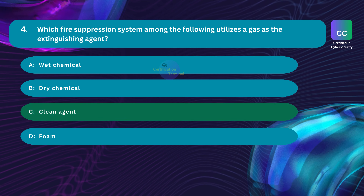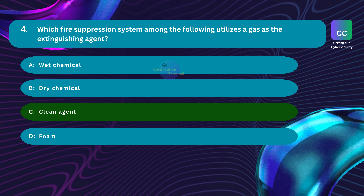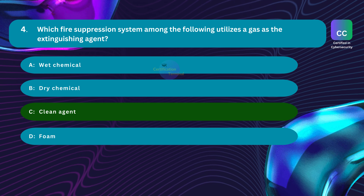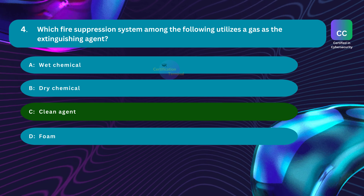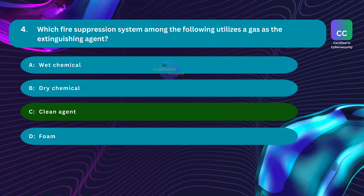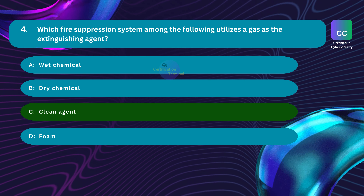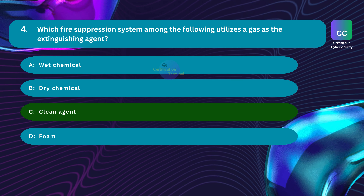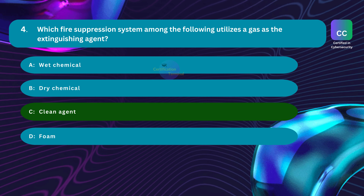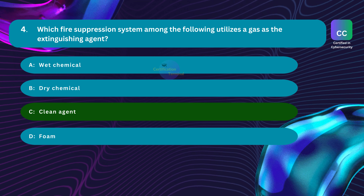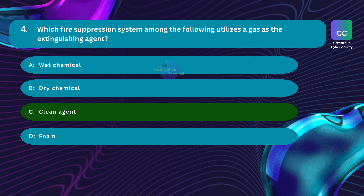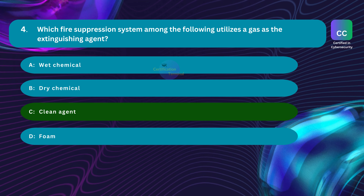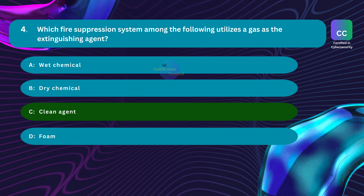The correct answer is Option C: clean agent. Clean agent systems use gases such as FM-200, NOVAC-1230, or CO2 that are non-conductive and leave no residue, making them suitable for protecting sensitive equipment like data centers. Option A, wet chemical, is incorrect — these systems utilize a potassium-based solution that reacts with cooking oils or fats to create a soapy layer preventing re-ignition. Option B, dry chemical, is incorrect — these systems use powdered chemicals like sodium bicarbonate or potassium chloride; when discharged, these fine powders coat the fuel, interrupting the chemical reaction of the fire. Option D, foam, is incorrect — foam-based systems discharge a mixture of water and foam concentrate that forms a blanket over the fuel, cutting off the oxygen supply and suppressing the fire.